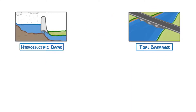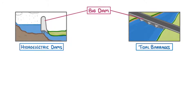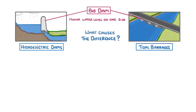The first thing to know is that both of these systems work in basically the same way. There's a big dam that prevents water from flowing like it should, and so we get a much higher water level on one side than the other. The only difference between the two is what causes the difference in water levels.